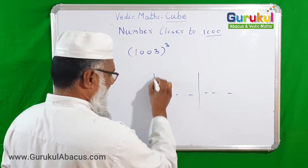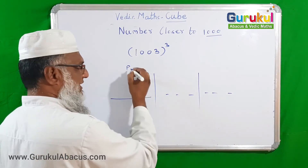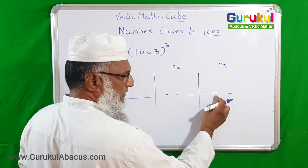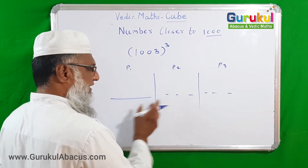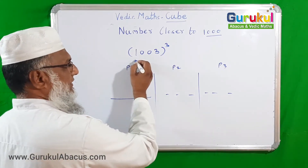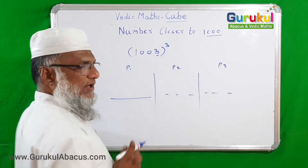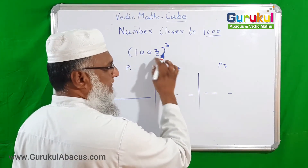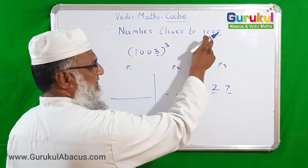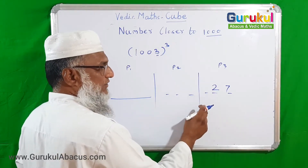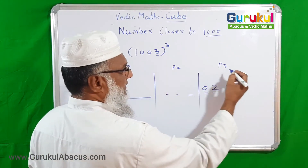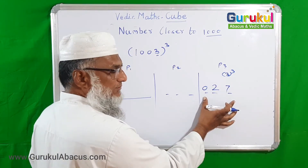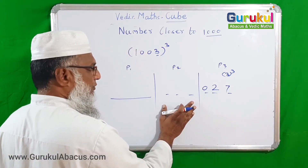To solve this, I divide the answer into three parts: P1 is the first part, P2 is the second part with three digits, and P3 is the third part also with three digits. To find P3: what is exceeding 1000? It is 3. So take the cube of 3. Cube of 3 is 27, but since 1000 has three zeros I want a three-digit number, so I add one zero to get 027.